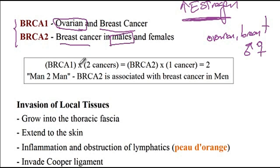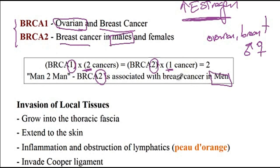A memory aid: BRCA1 is causing two cancers — breast and ovarian — while BRCA2 is causing one cancer primarily. Man to man: BRCA2 is associated with increased risk of breast cancer in men, while BRCA1 — one times two — causes breast and ovarian cancers.